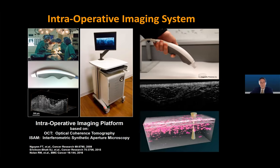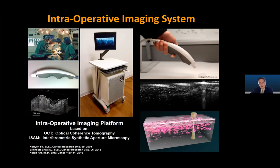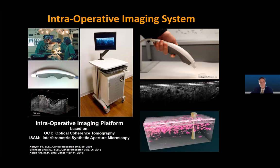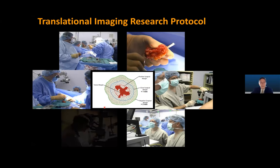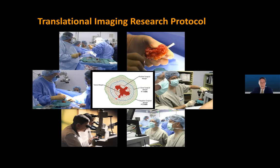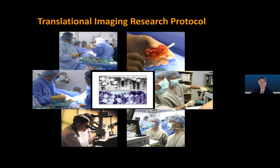We developed a handheld probe that the surgeon uses. What you're seeing is a video as this probe is being swiped across the margin. We see different structures — honeycomb structures and more linear structures. We developed an imaging protocol to bring this technology into the operating room. What we're after is determining whether tumor cells are deep within the resected mass — a negative surgical margin — whether they're close, or whether it's a positive margin with tumor cells at the surface. We compare our images to what histology finds days later.